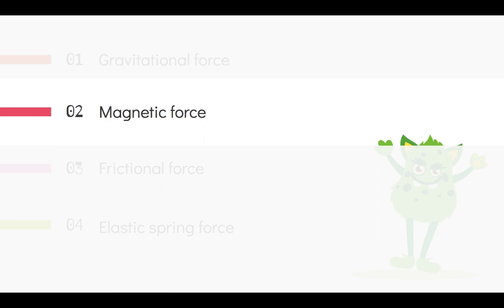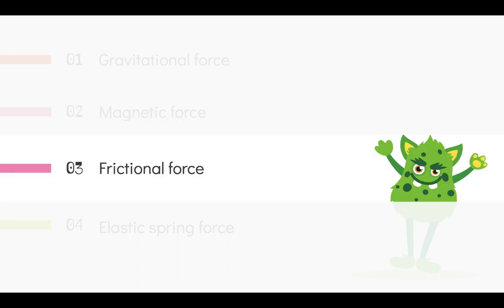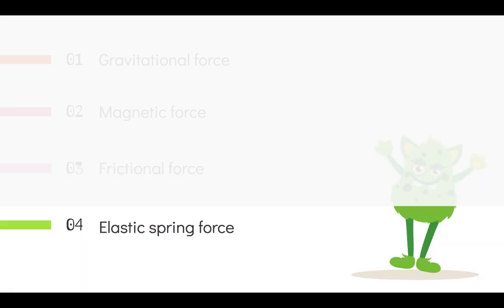Magnetic force is the force exerted by magnets on magnetic materials. Frictional force is the force that opposes motion. Elastic spring force is the force exerted onto an object that is compressing or stretching it.